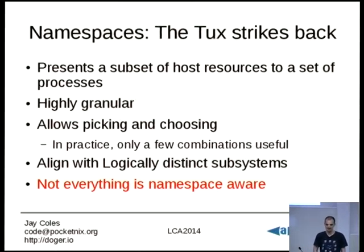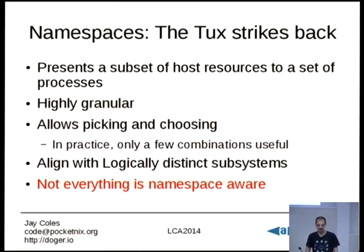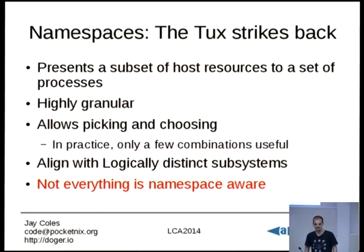In practice, only a few namespaces are actually useful, and some combinations — if you don't use certain combinations — are actually security holes. They map fairly well to logically distinct subsystems in the Linux kernel. If you've ever done a kernel compile and looked at all the subsystems, you should be able to see what each namespace maps to.